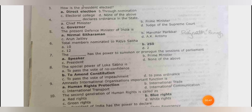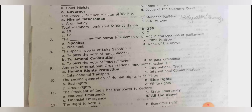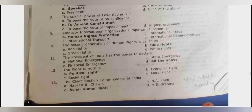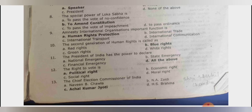Currently we have 543 Lok Sabha members and 245 Rajya Sabha members, so don't get confused with the total number. The speaker has the power to summon and prorogue sessions of Parliament. The special power of Lok Sabha is to amend the constitution. Amnesty International's most important function is human rights protection — if asked which organization, the answer is Amnesty International.